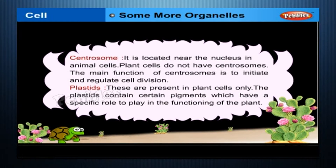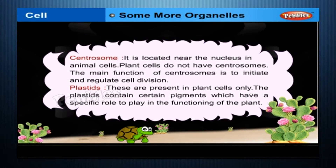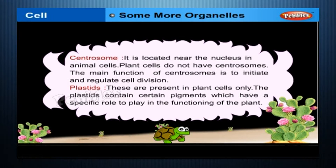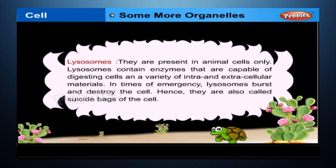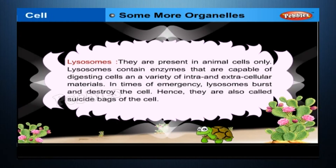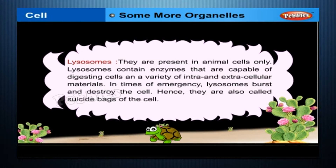Centrosome is located near the nucleus in animal cells; plant cells do not have centrosomes. The main function of centrosomes is to initiate and regulate cell division. Plastids are present in plant cells only; they contain certain pigments which have a specific role in the functioning of the plant. Lysosomes are present in animal cells only and contain enzymes capable of digesting cells and a variety of intra- and extracellular materials. In times of emergency, lysosomes burst and destroy the cell; hence they are also called suicide bags of the cell.